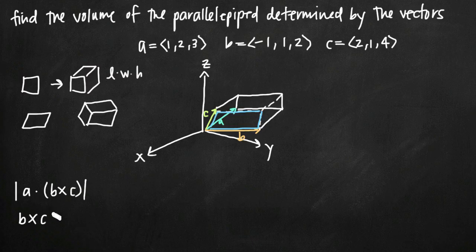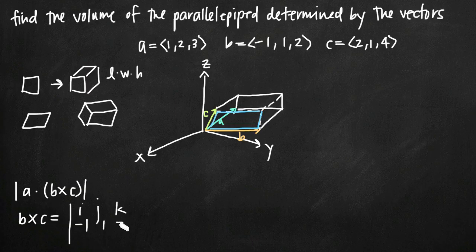The best way to find the scalar triple product is to first find the cross product of b and c. We set up our matrix with i, j, and k in the first row, vector b = (-1, 1, 2) in the second row, and vector c = (2, 1, 4) in the third row. When we take the determinant of this matrix and break it into its pieces...